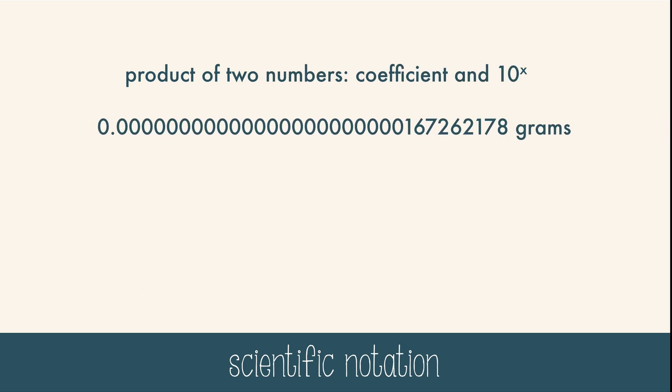In scientific notation you write a coefficient times 10 to some power. Here's how we would rewrite this very small number: you move the decimal to just after the first digit. If the decimal needs to move to the right, it becomes a negative exponent. The number of the exponent is how many spaces the decimal moved.